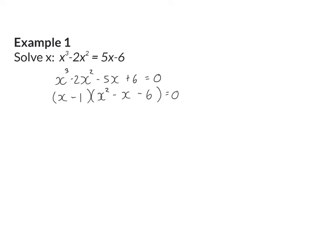You can always go back to lesson 2, the previous lesson, if you're unsure about any of these steps. And now, if it is possible, we will factorize the quadratic factor further, and in this case it is possible, and we will factorize it as x minus 3 multiplied by x plus 2.